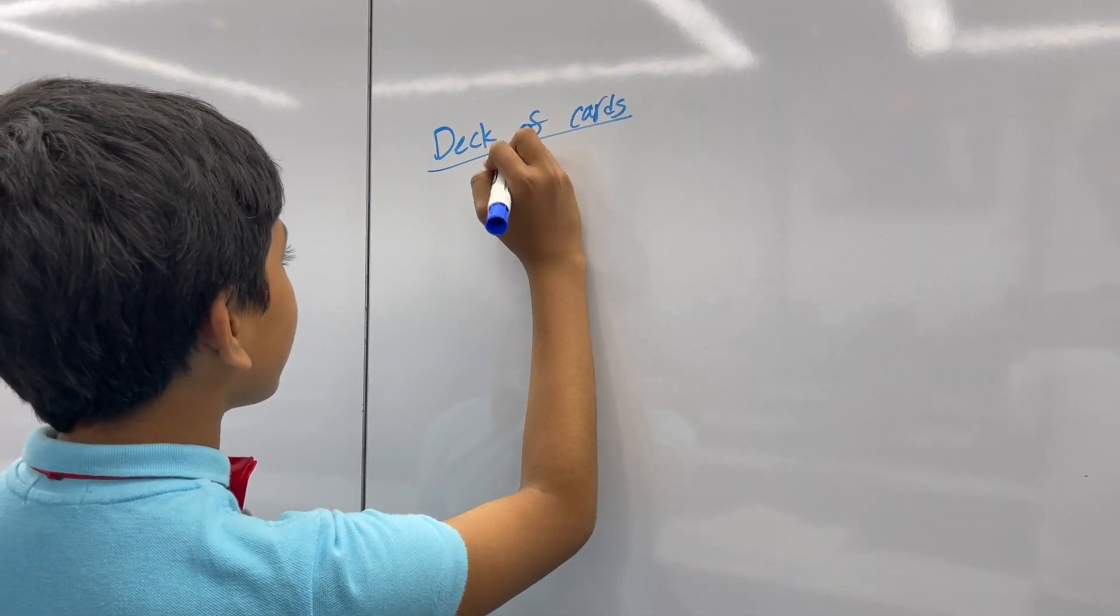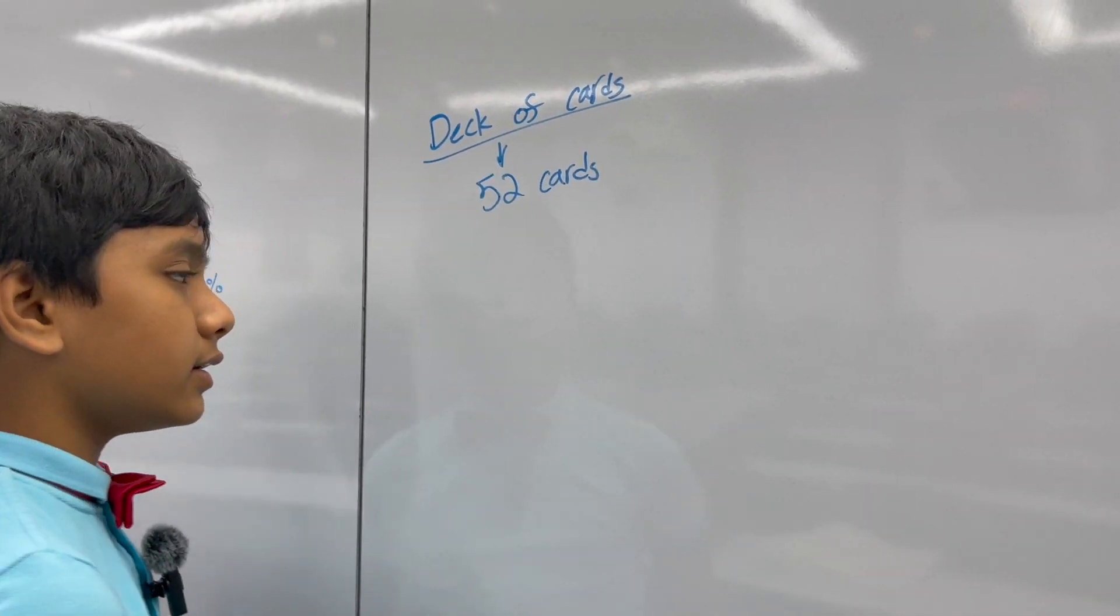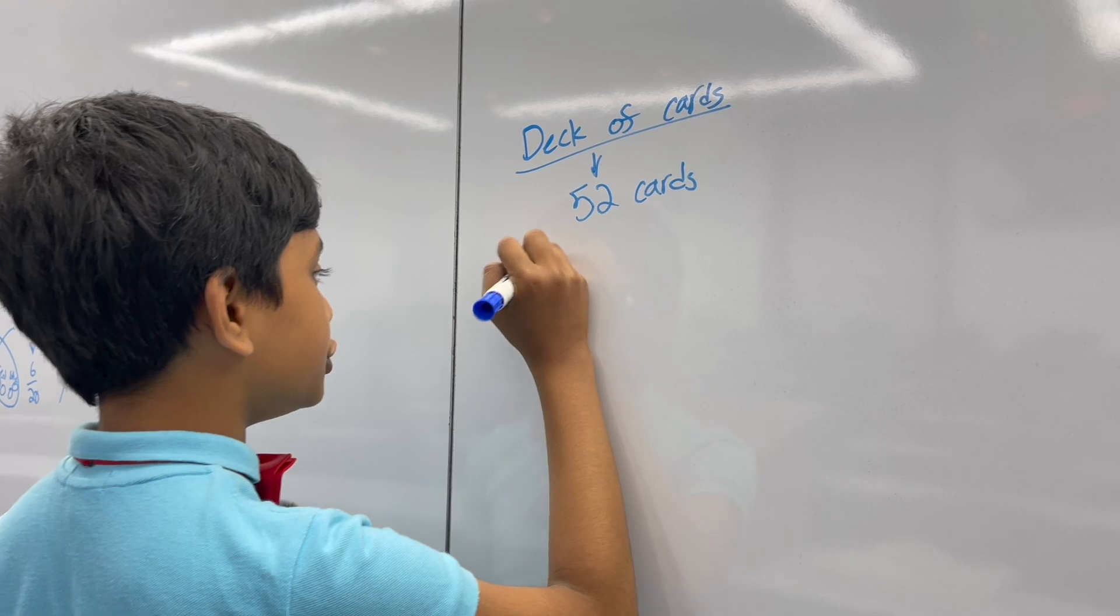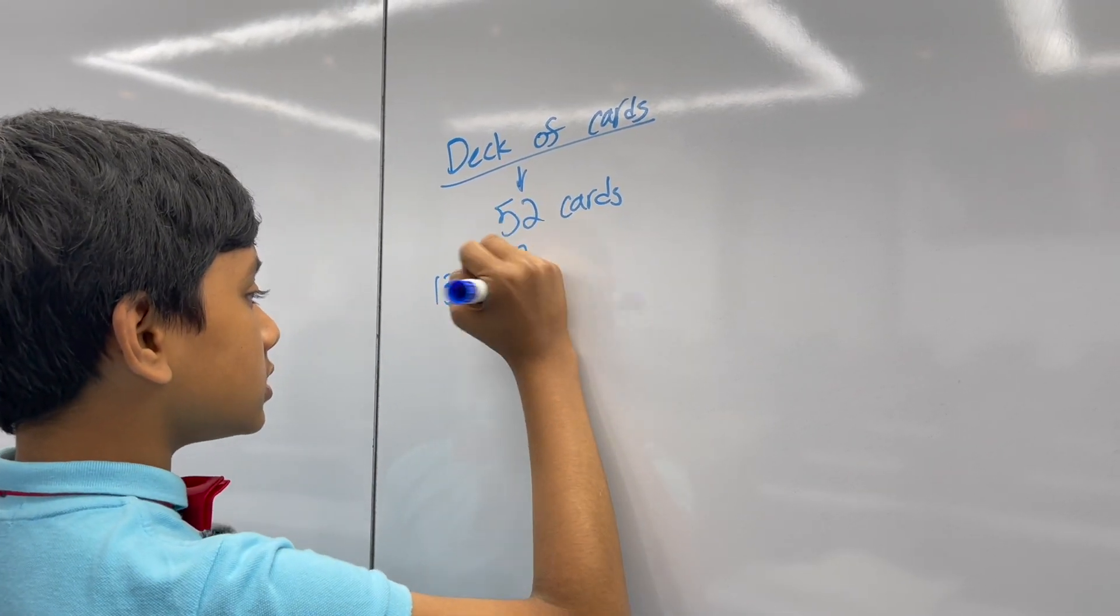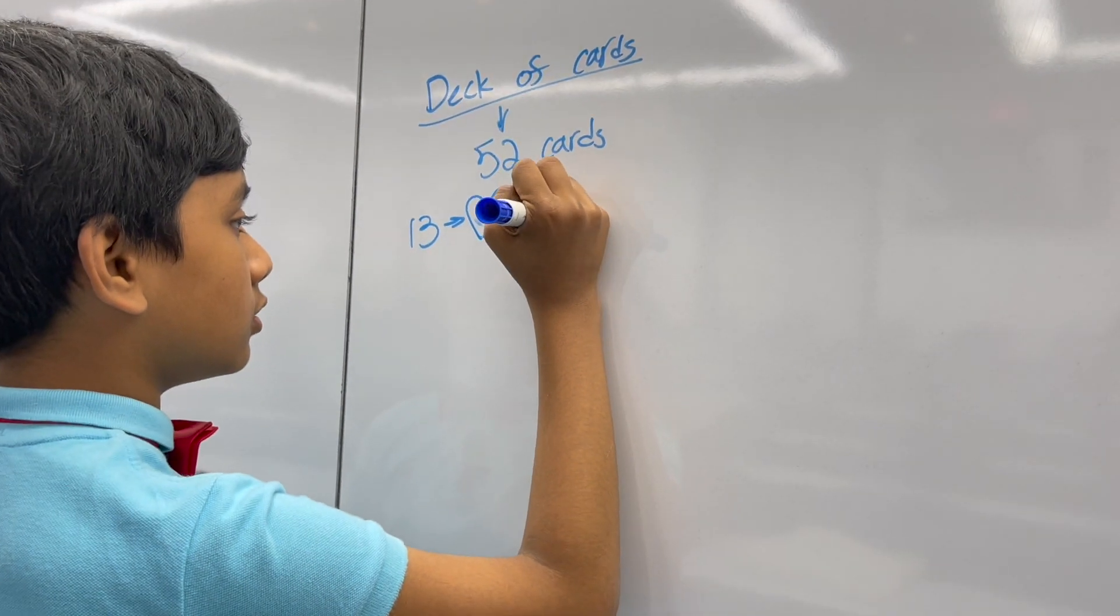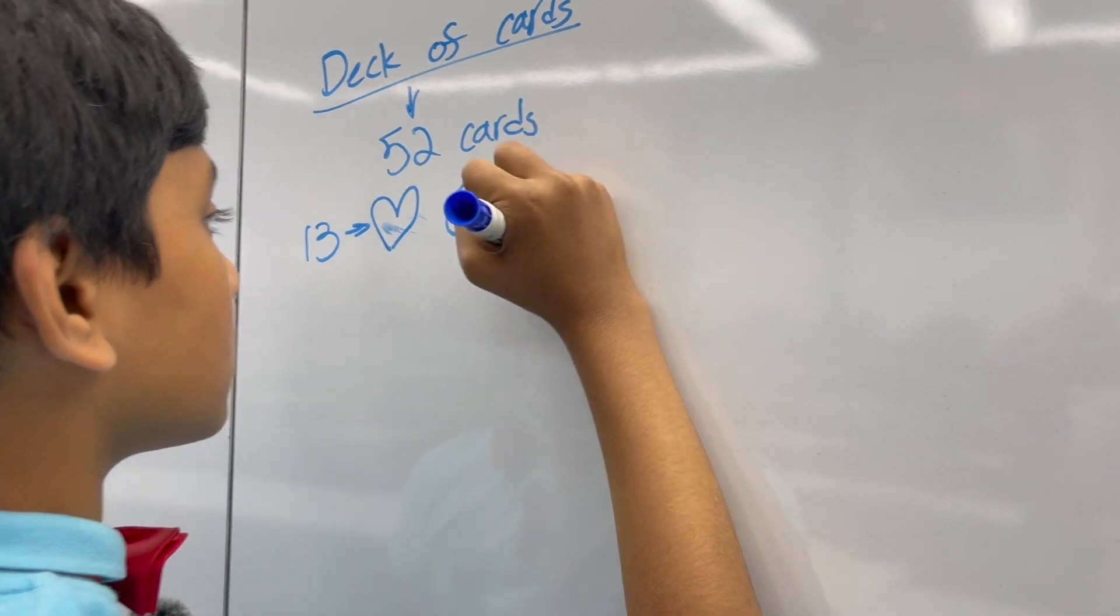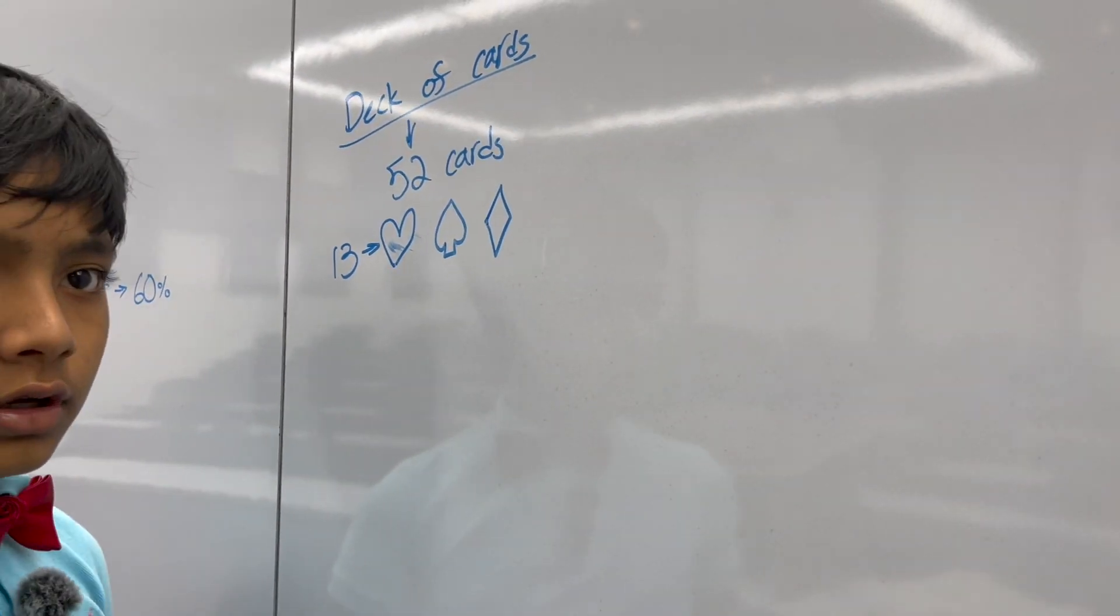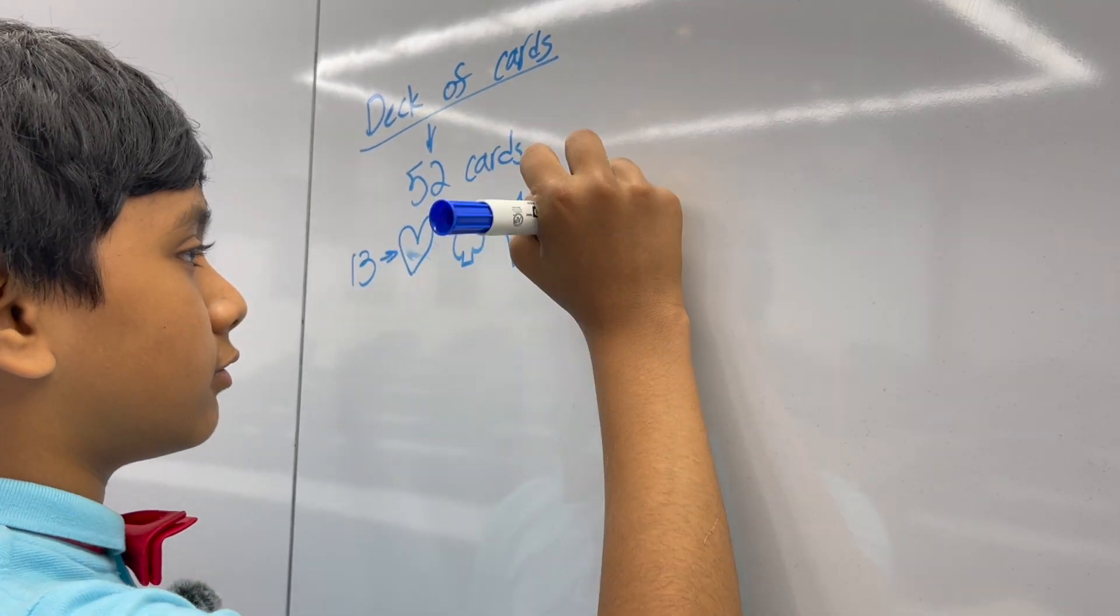So, one deck of cards has fifty-two cards, right? Thirteen of each suit. Pretty sure there are hearts, beads, no matter how I draw spades, they always look like a ball pack. We have diamonds, and I'm not sure what the fourth suit was, I don't play poker, so I'll just call it the Crescent.